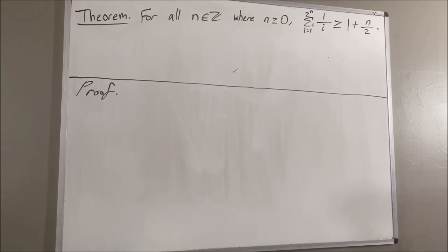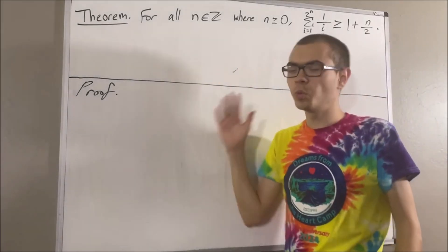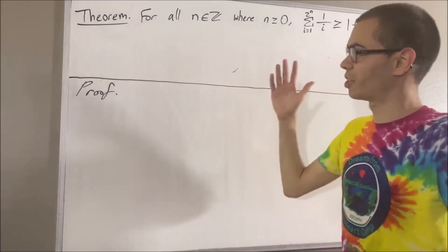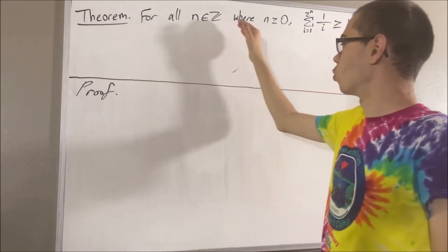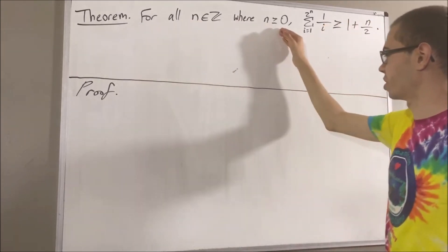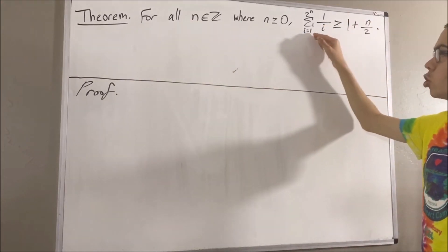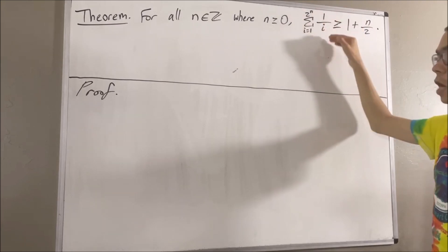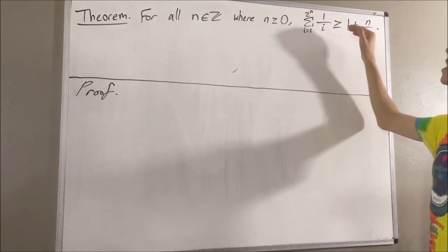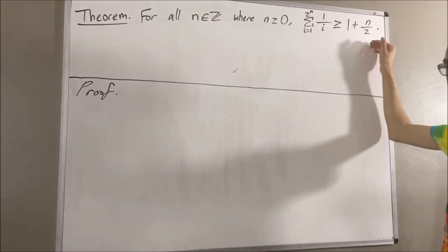Hello! In this video, we are going to prove the following theorem: for all integers n where n is greater than or equal to 0, the sum from i equals 1 to 2 to the power of n of 1 over i is greater than or equal to 1 plus n over 2.